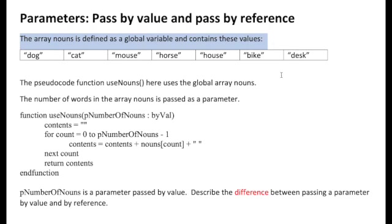Let's refresh our memory on the definition of a global variable. The lifespan of a global variable is the entire program — it's accessible throughout the whole duration of the program. The visibility of a global variable is also the entire program, so it can be used by all parts of the program including sub-programs.